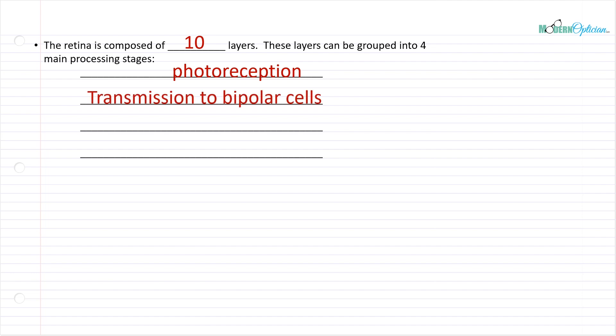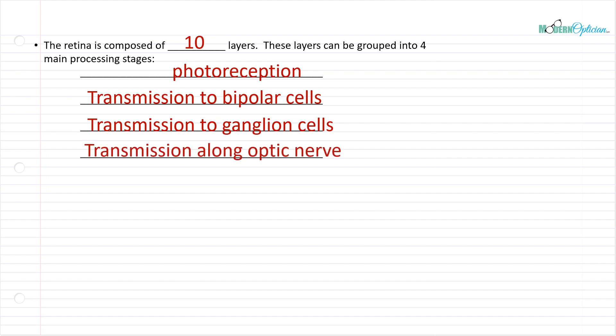The next stage is transmitting the signal to bipolar cells. The interesting thing about bipolar cells is that they have the ability to change their conformation once excited, and this actually triggers a lot of the nerve impulses later on. From there, the signal transmits to the ganglion cells. Another interesting thing about these cells is that the ganglion cells are shared between the retina and the optic nerve, which helps us understand the pathway of these signals — from light refracted into the eye, captured by the retina, and then transmitted. And then of course the next step is transmission along the optic nerve.